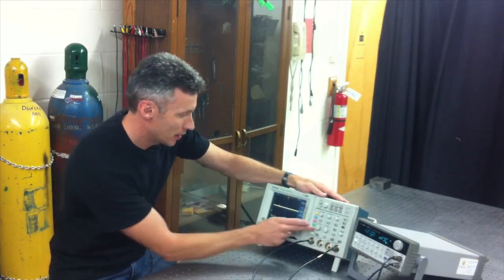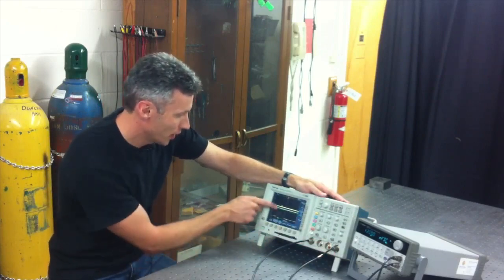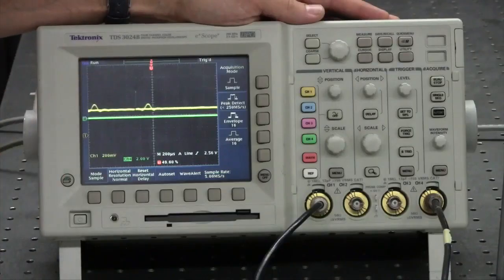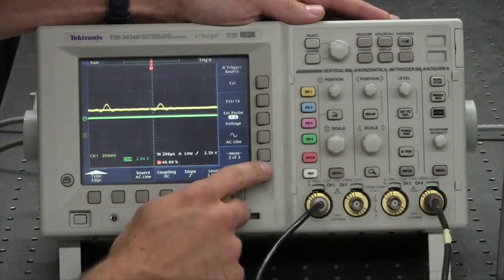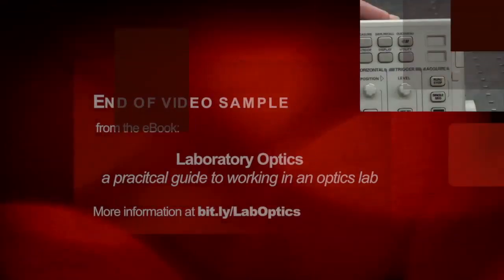So I've connected that sync signal to channel 4, and here I see a pulse corresponding to that. And I will set the trigger to trigger off of channel 4.